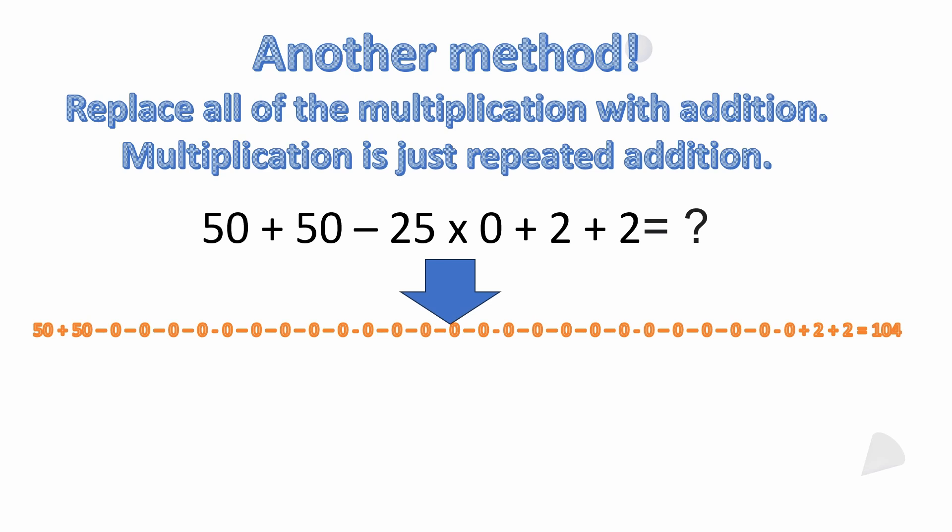So I can replace 25 times 0 with subtracting 25 zeros. It's all the same thing. So what I'm showing here on this bottom line is 50 plus 50, and then I'm subtracting 25 zeros. There's no difference between that and saying negative 25 times 0. It's the same thing. You know, adding zeros, subtracting zeros, it's all zero.